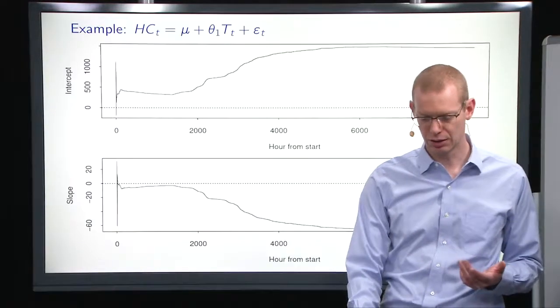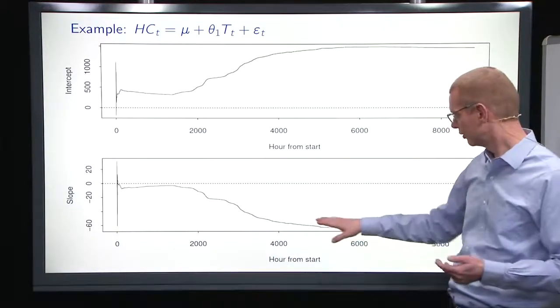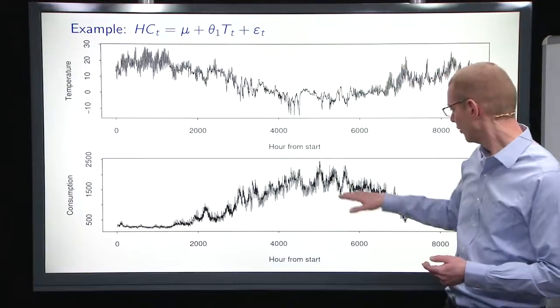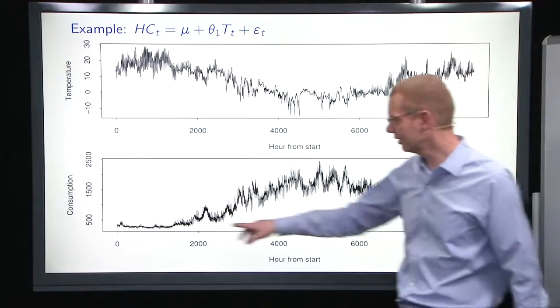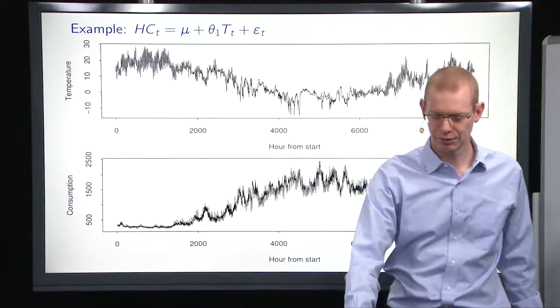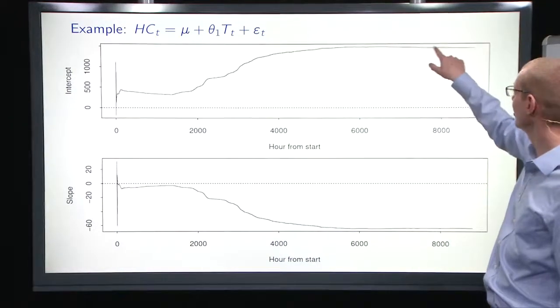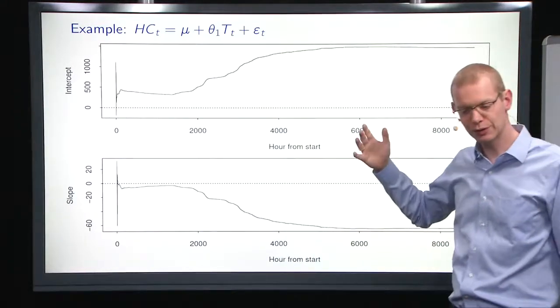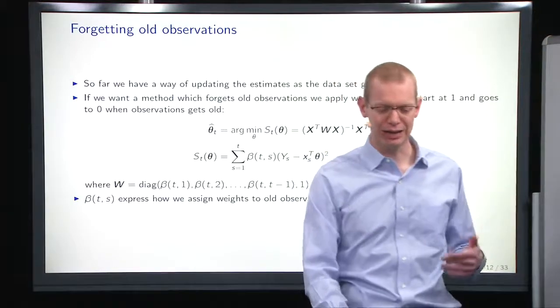Now, what was happening there was that we saw that when the winter came, something else was, then the model adapted to that. That's perfectly fine, but when the next summer is coming, why is that different from the previous summer? Why doesn't it go back down? Well, it starts to go back down a little bit, but not a whole lot. The reason for this is that we're not forgetting anything. We are just adding and adding and adding.